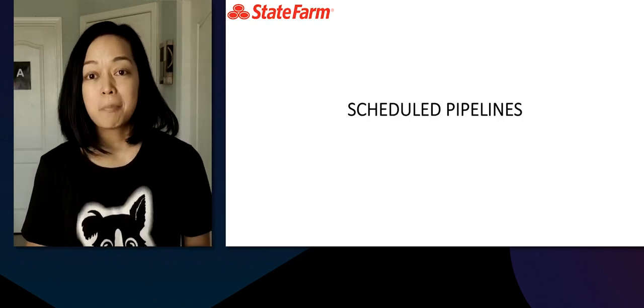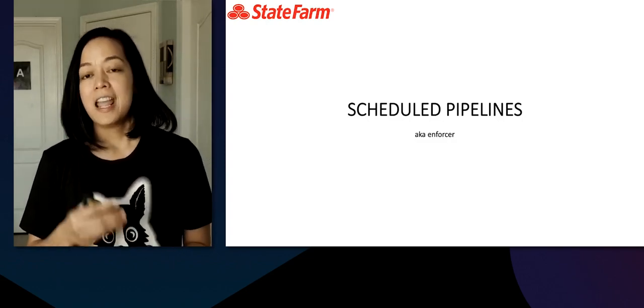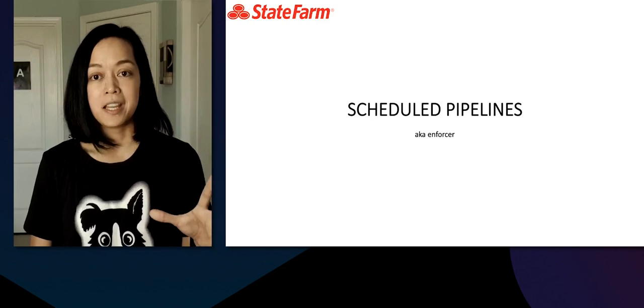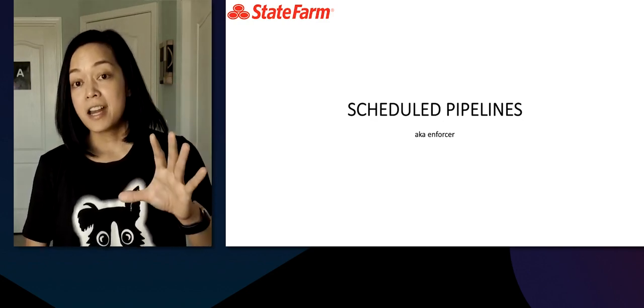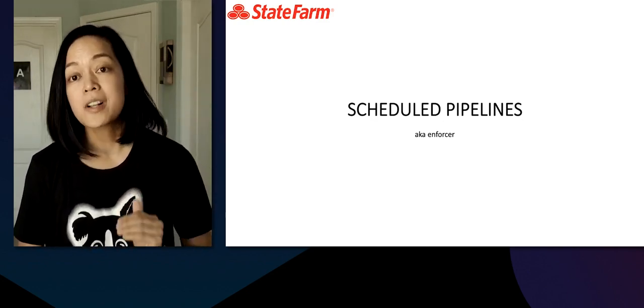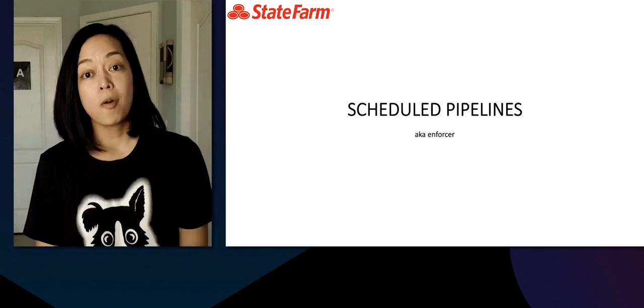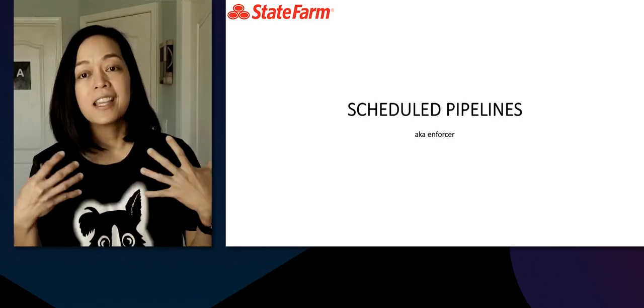Last — secret sauce: scheduled pipelines. We call it the enforcer. Every night we have a scheduled pipeline — the recurrence can be adjusted — that goes out to every single one of those TFE workspaces under the GitOps organization and does a Terraform apply. It's our way of embracing infrastructure as code: the code is your source of truth, and that is what gets realized in how your resources are configured and stood up — not just the first time, but reinforced on a recurring basis.